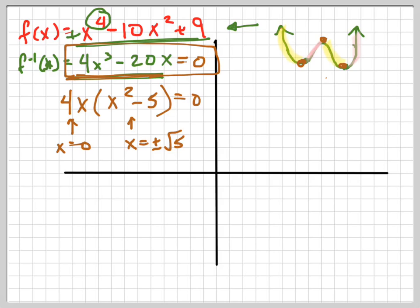So the square root of 5 is a little bit more than 2. So I'm going to have, right here, let's call that the positive square root of 5. Let's call that the negative square root of 5. And here's 0, right here. Those are the three places.